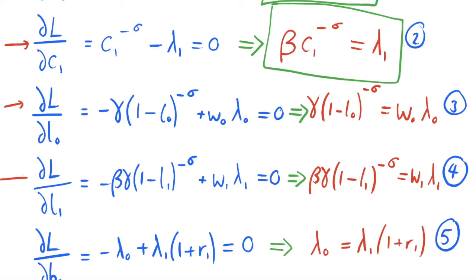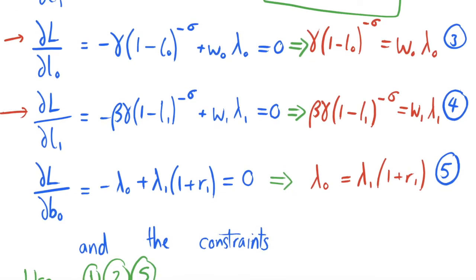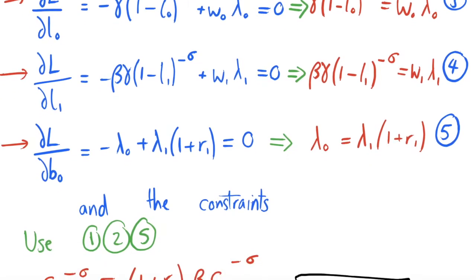We also get two more equations by differentiating with respect to lambda zero and lambda one, which just recover our two budget constraints. As we always do when solving a Lagrangian, we then substitute equations into each other to derive results and gain intuition about the propagation mechanisms.